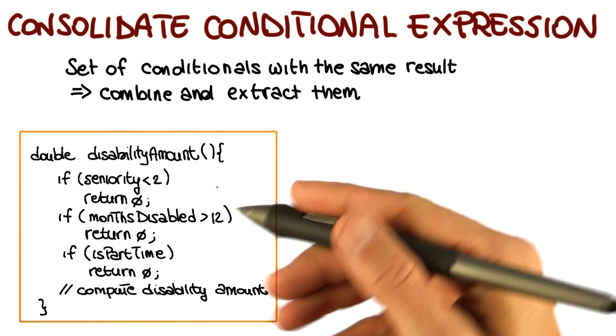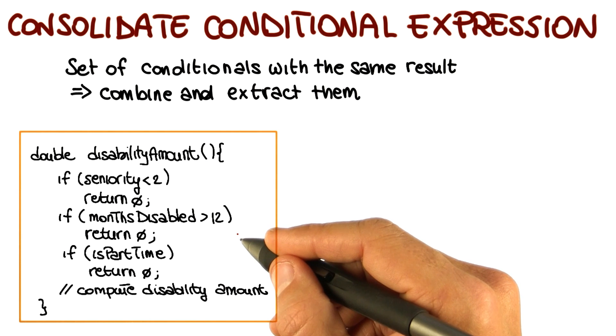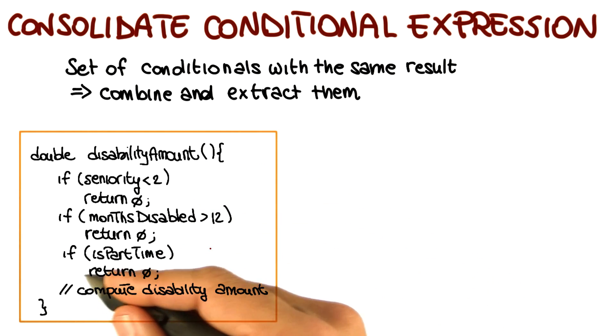You can see an example of that situation in this code, which is the disability amount method. As the name of the method says, the purpose of this code is to compute the disability amount for a given employee.